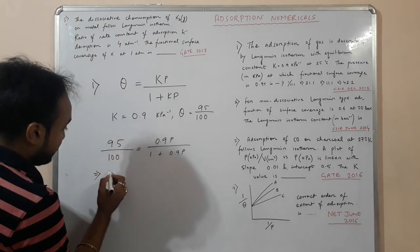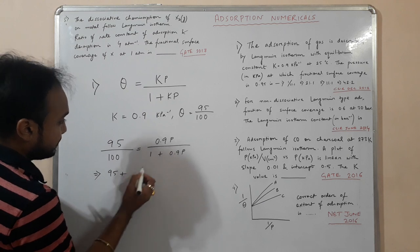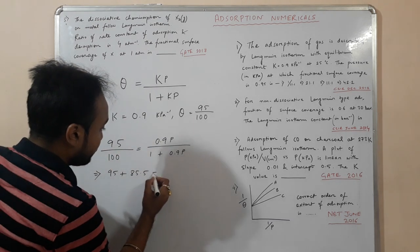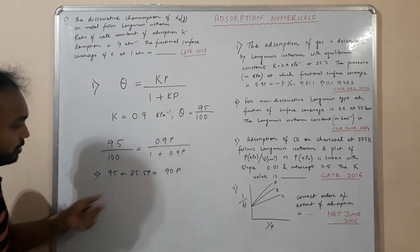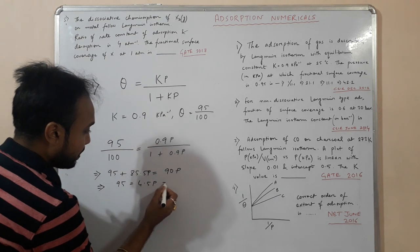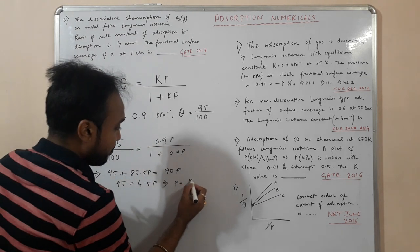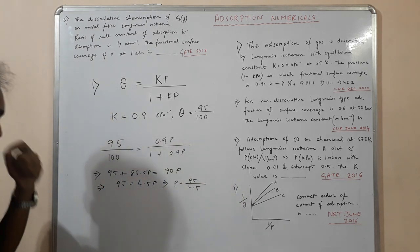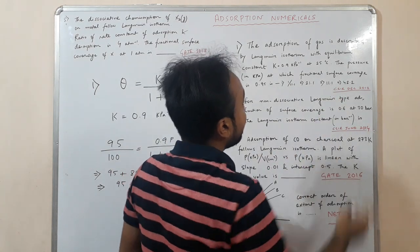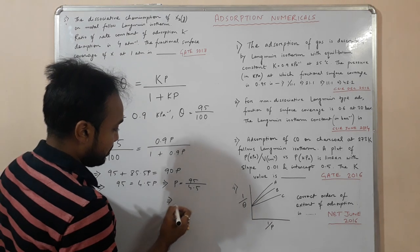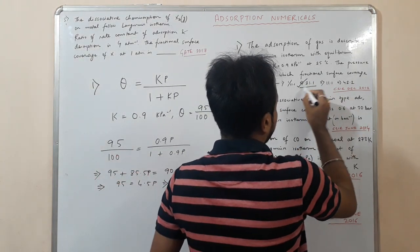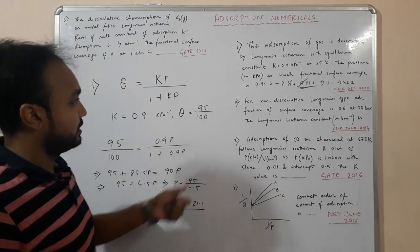So this one is 95 plus 95 into 0.9, that comes to be 85.5 equals 90p. So 95 equals 4.5p, that gives p equals 95 by 4.5, which is roughly around 21.1 kilopascal. So the answer is 21.1 kilopascal, second option is the correct answer.